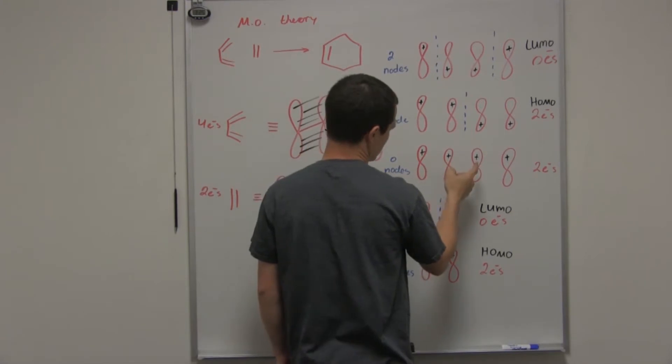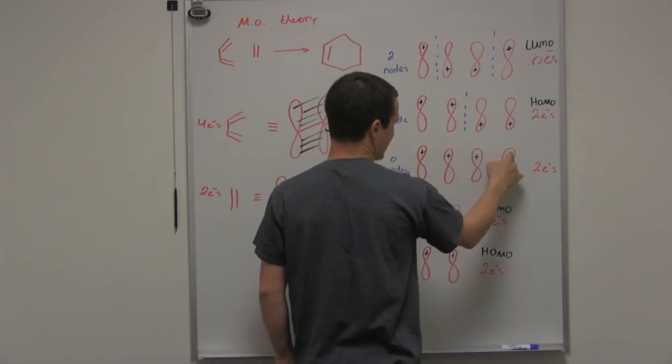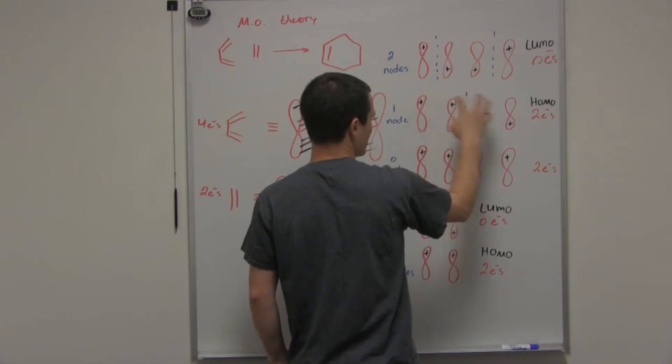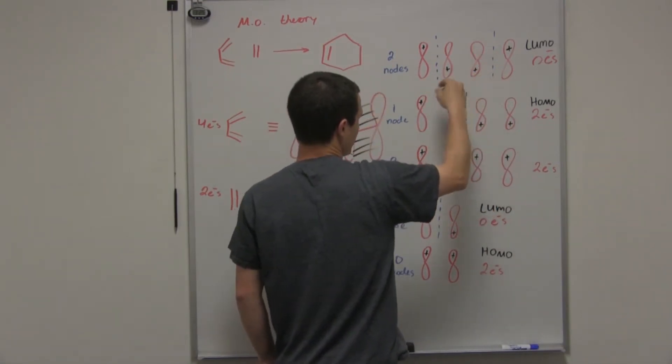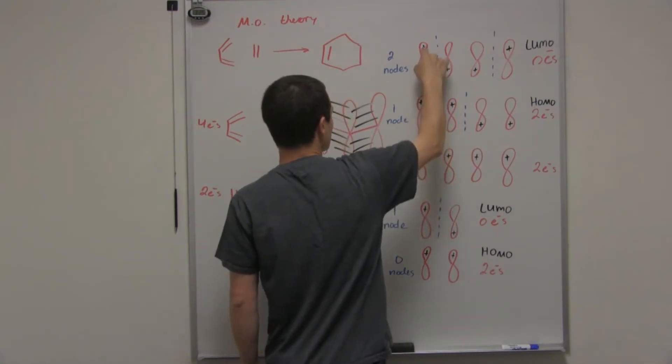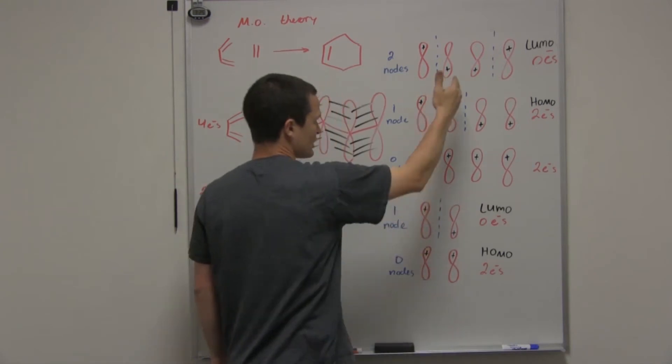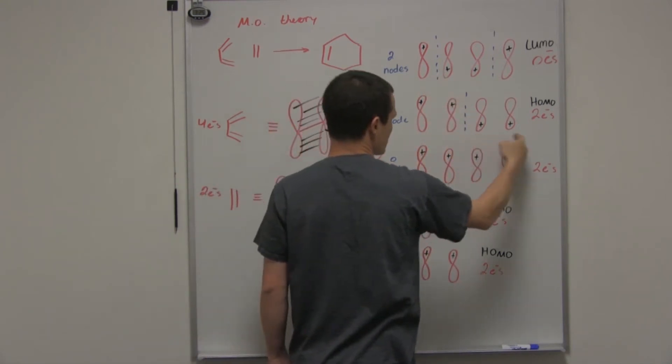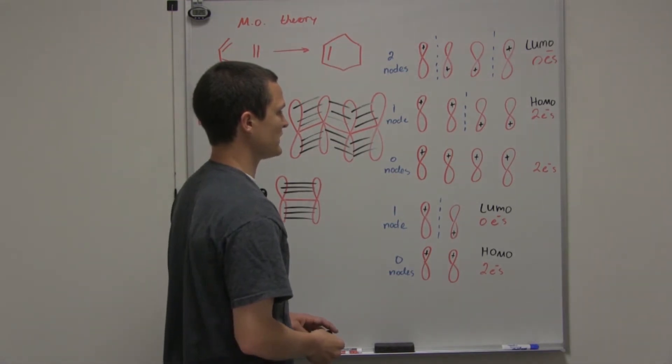And notice the positive signs, that's just saying that this is the same as that, and that, and that, and these two are the same, and these two are the same, and vice versa. This is the same, those two would be the same, those two are the same. Every single time you have a node, you have to flip your signs on your individual orbitals.